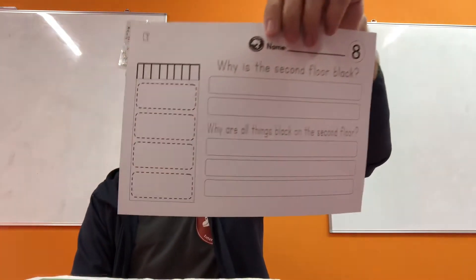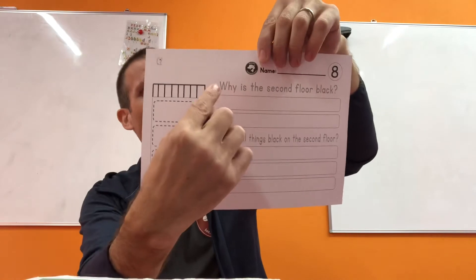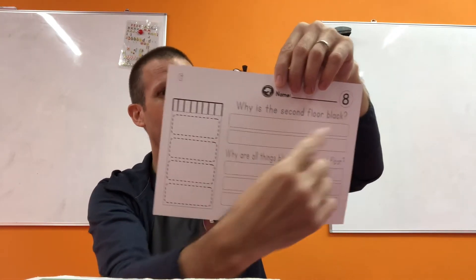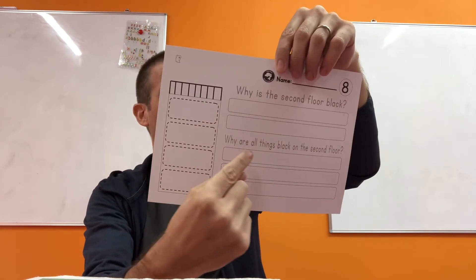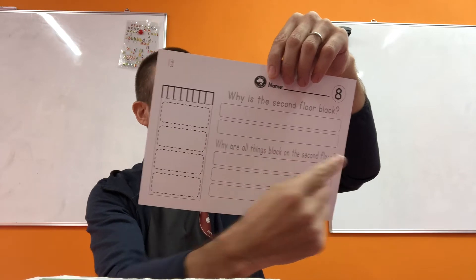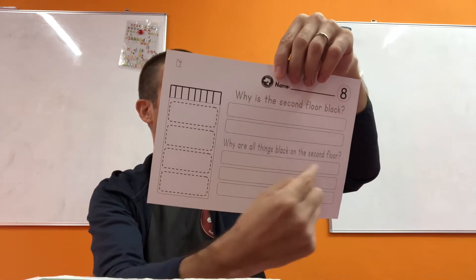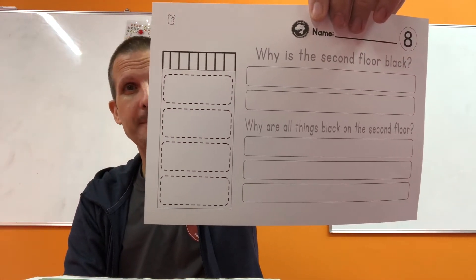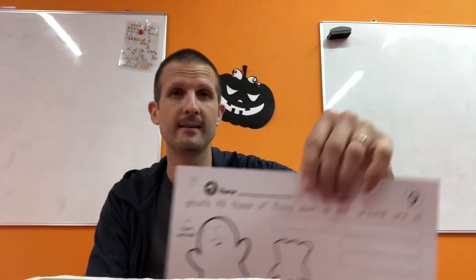Okay, this is number eight — good questions, right? Lots of answers here. Why is the second floor black? The second floor is black because it is night. Why are all things black on the second floor? All things are black on the second floor because it is night. Your writing skill is getting so good, everybody — I can see it. I'm watching everybody every day. Really good.